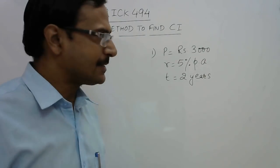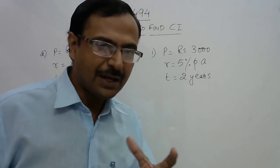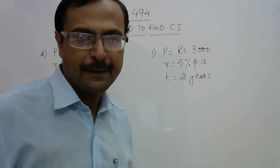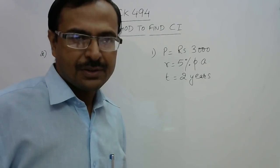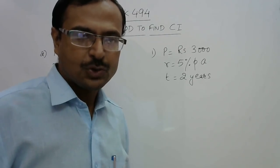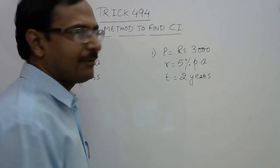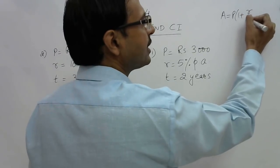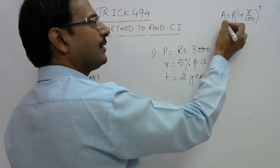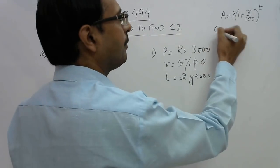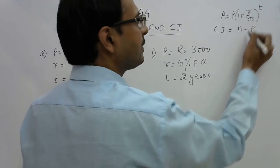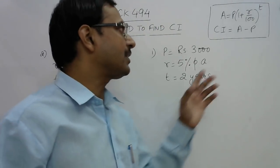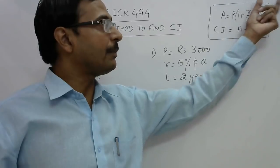Now compound interest. The formula we are going to use is different from the traditional approach. The traditional formula students use at school level is: Amount = P × (1 + r/100)^t. Once they get the amount, compound interest is found by using Amount minus Principal. This is the traditional approach.